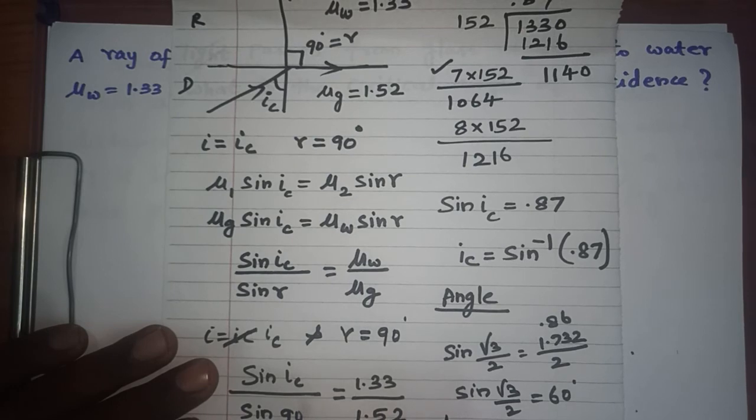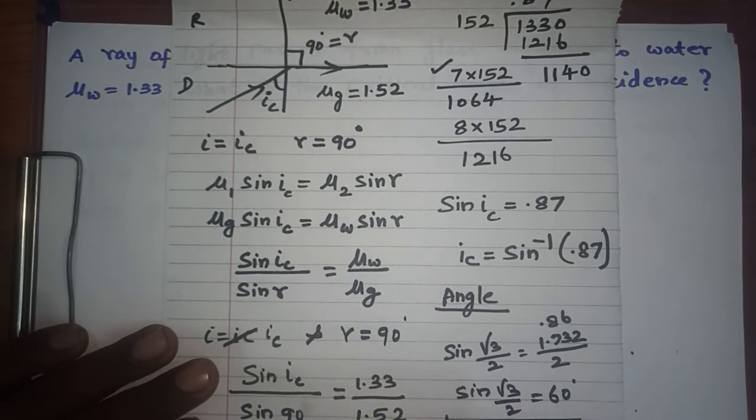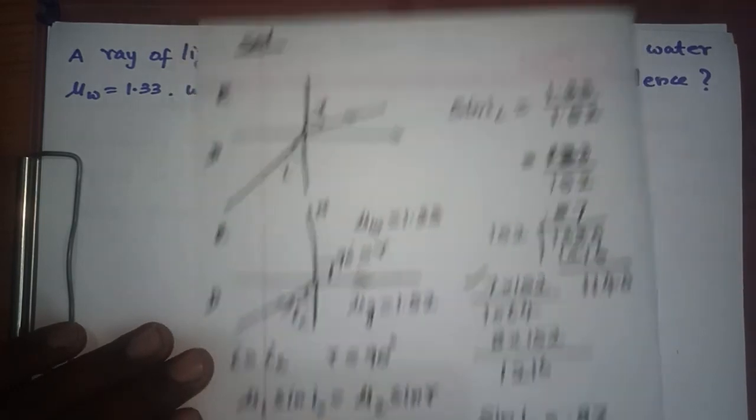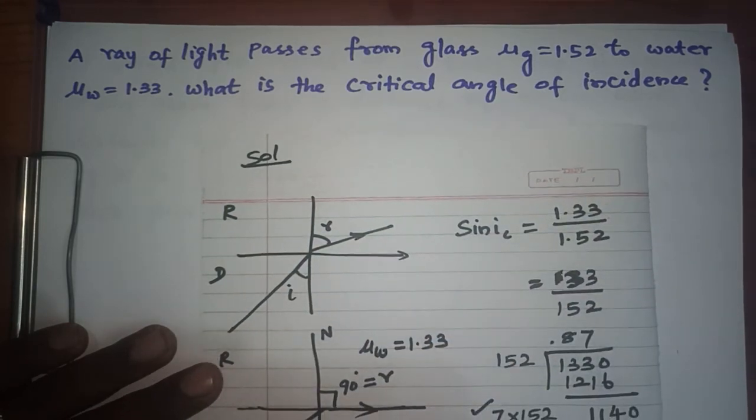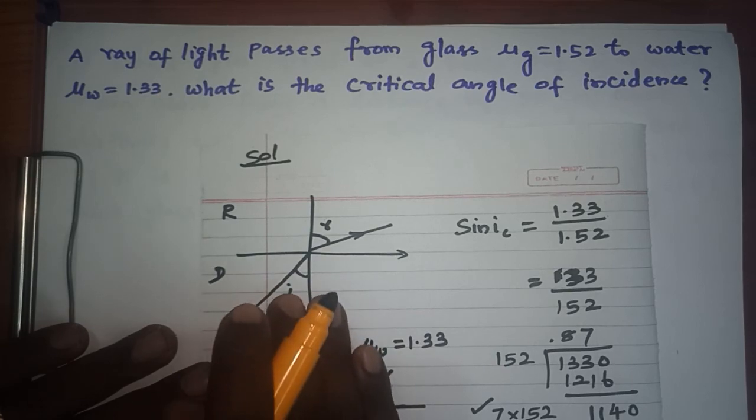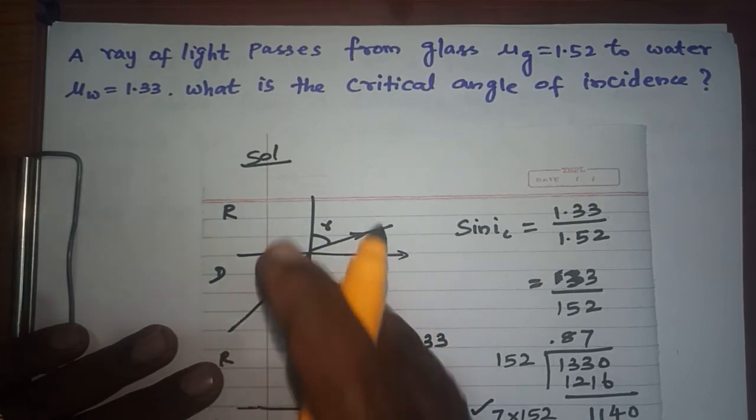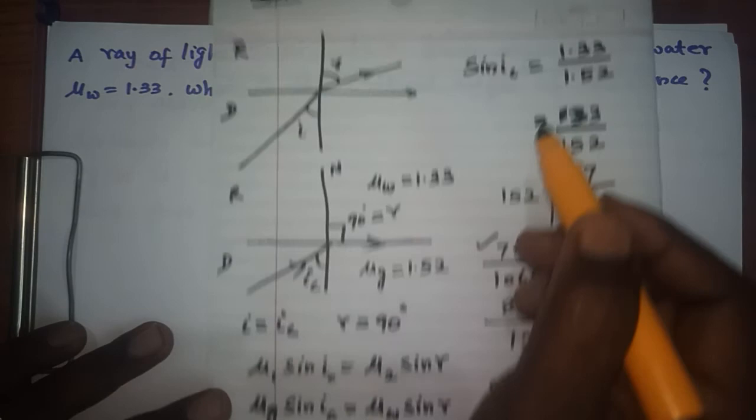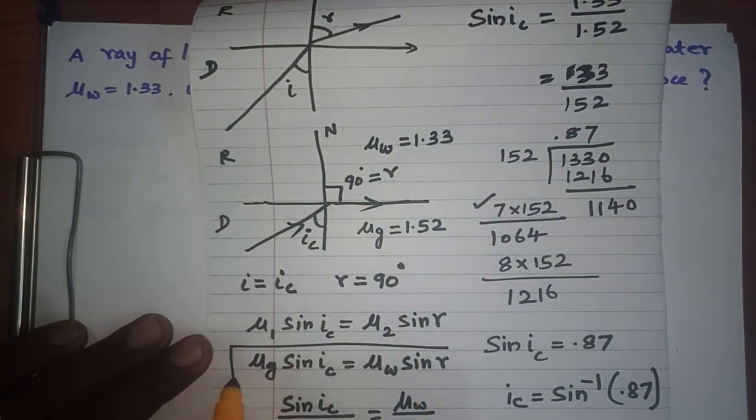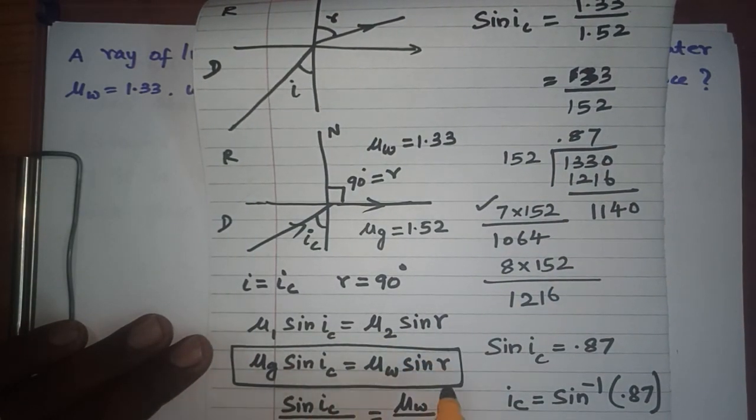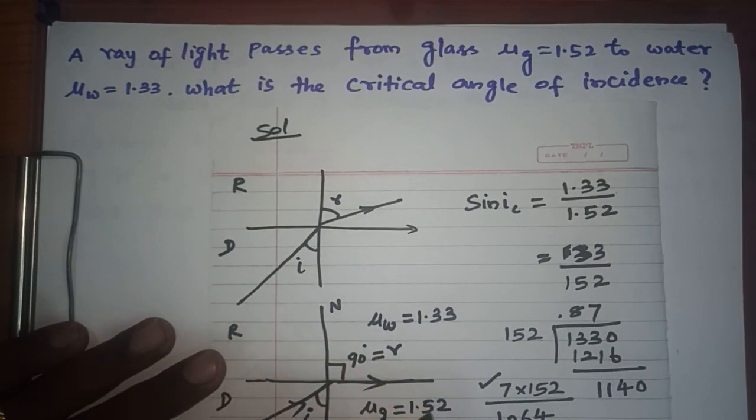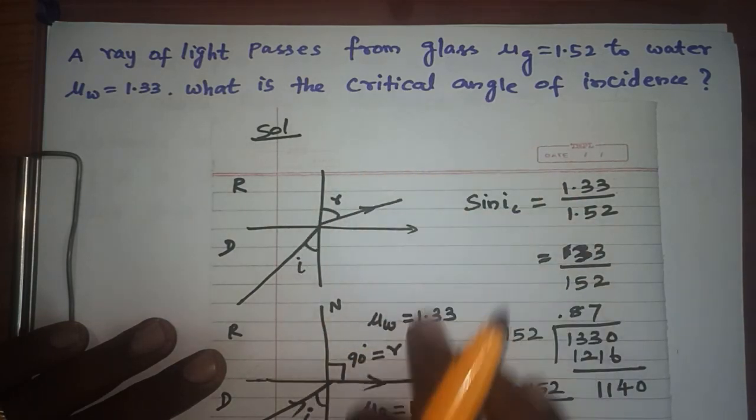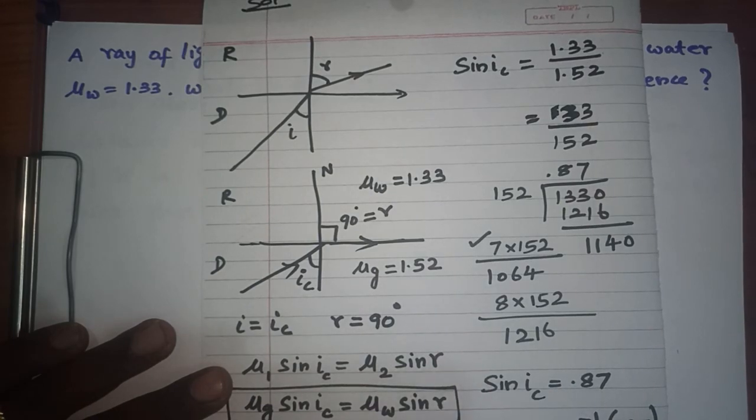So dear viewers, you just see what is the sum and how to plug in the values. If you know the concepts well, you can immediately at the first step when approaching this sum write down μ_g into sin i_c equals μ_w into sin r and proceed. But for your information, I'm giving some inputs on how you can work out when you need to find the critical angle of incidence. Keep watching for the next term.